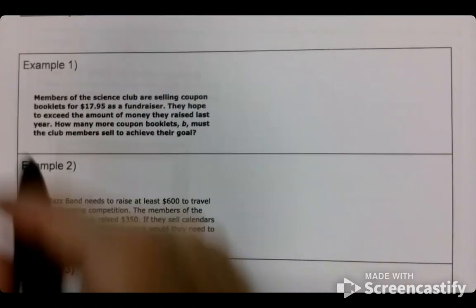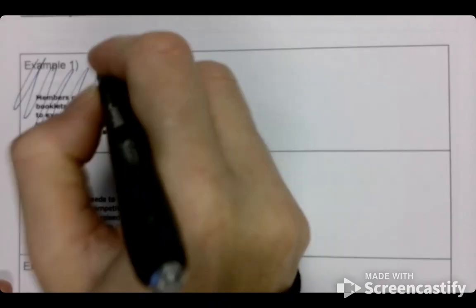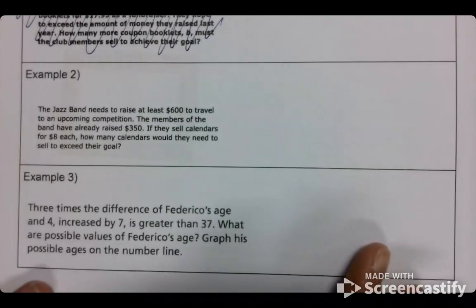So number one, you cannot do. Ms. Sherman messed up and did not give you enough information, so we're just going to cross that out. And we are going to look at number two.